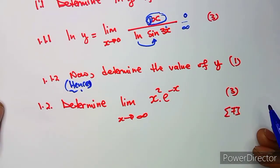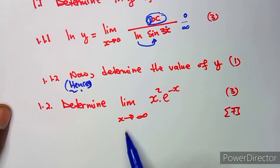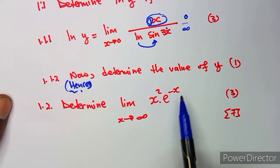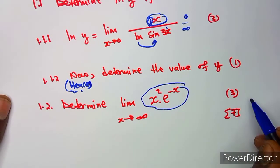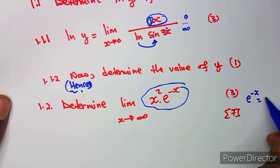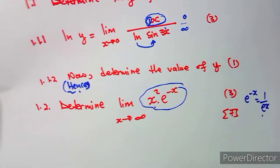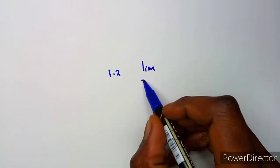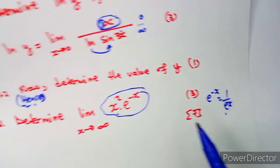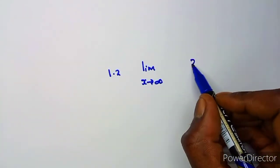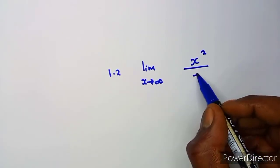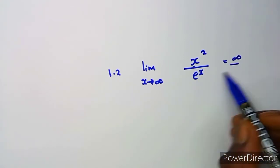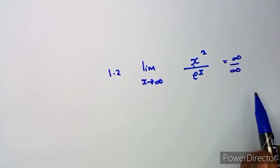For question 1.2, determine the limit as x approaches infinity of x²·e^(−x). This is difficult to work with directly, so we rewrite using laws of exponents: e^(−x) = 1/e^x. So the expression becomes x² over e^x. Substituting infinity gives infinity over infinity, which is an indeterminate form.